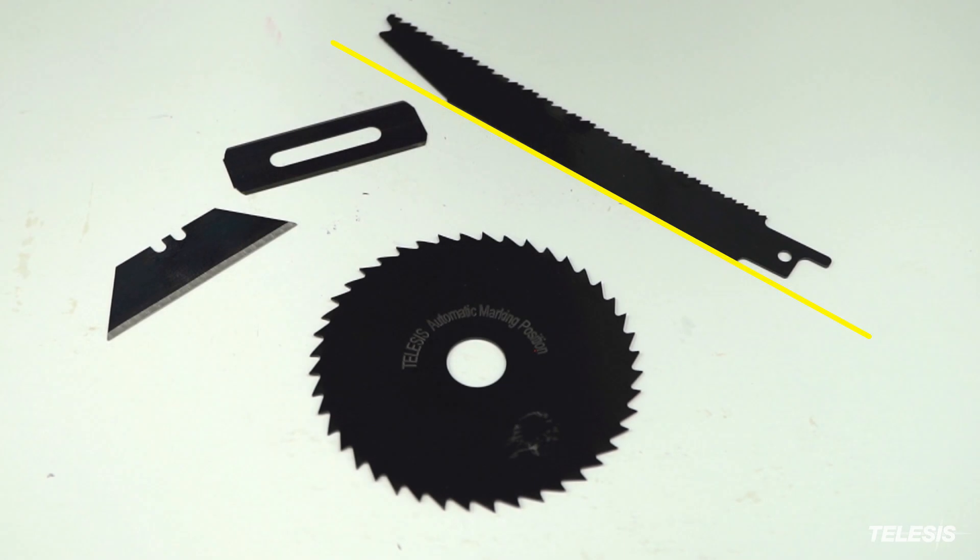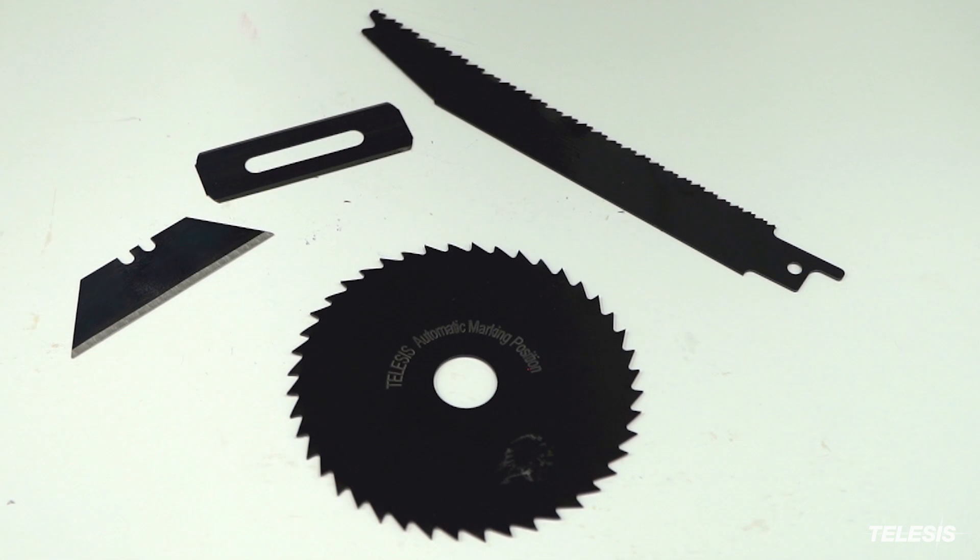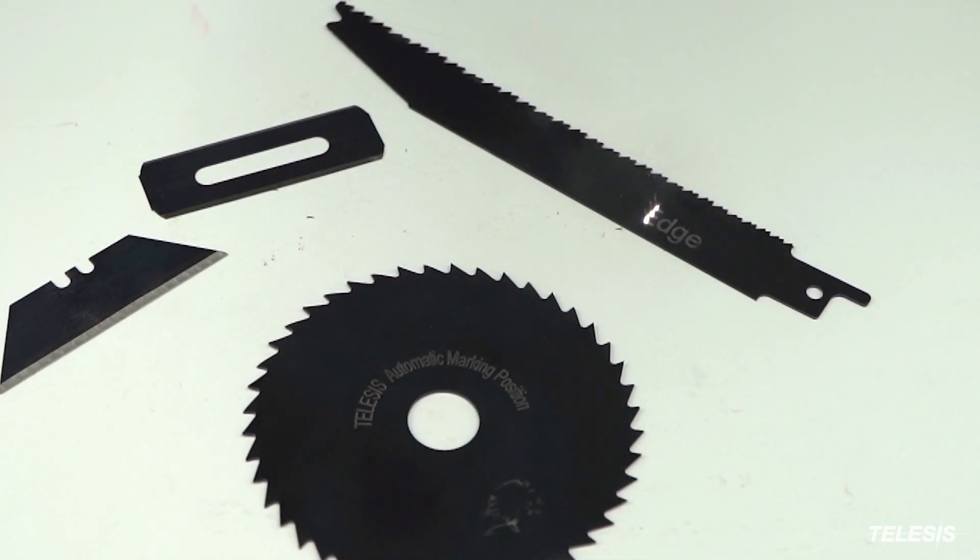When the part is larger than the marking area, using the Edge tool will look for an edge and then mark the part from that edge. Eyes On It will find it.